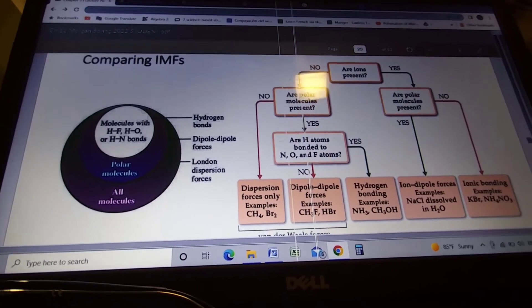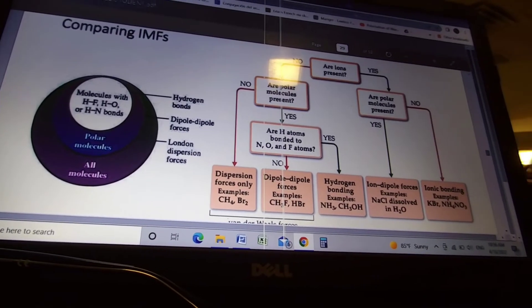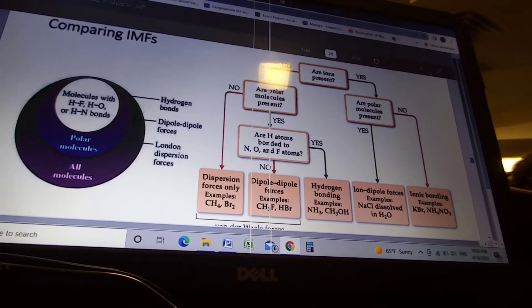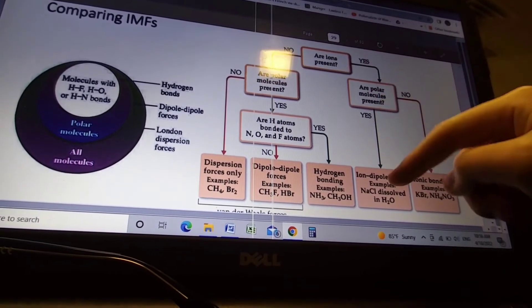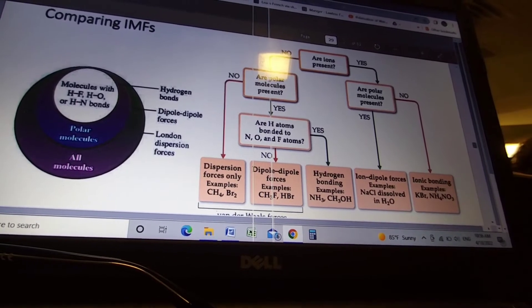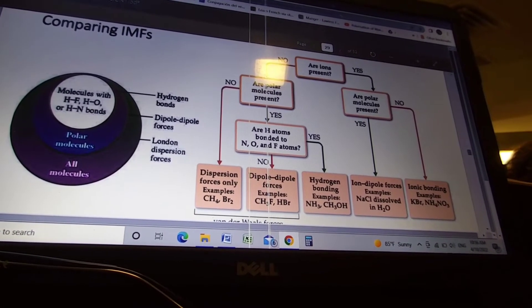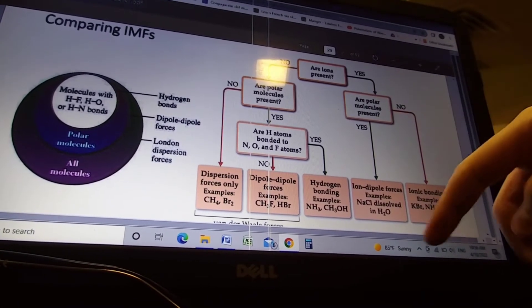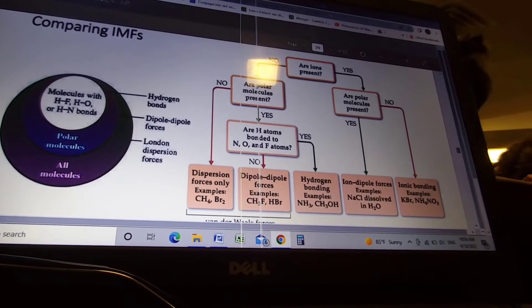So another flowchart here. We start off with: are there ions present? Yes. Are there polar molecules present? Then yes, we have ion-dipole forces. Are there ions present but no polar molecules? Then you have an ionic bond. Obviously an ionic bond is very strong, going to be stronger than an intermolecular force. Ion-dipole forces typically tend to be stronger than some of the other ones.